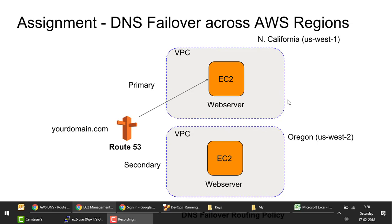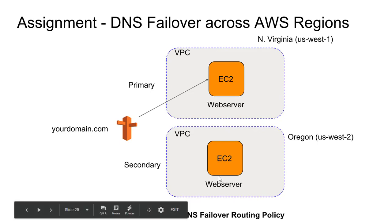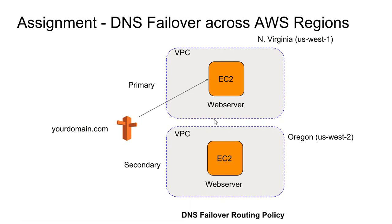We would have two web servers across two different AWS regions. The first web server is in North California (US-West-1), and another failover web server in another AWS region. When the web server in US-West-1 goes down, we would fail over to the next region, US-West-2.